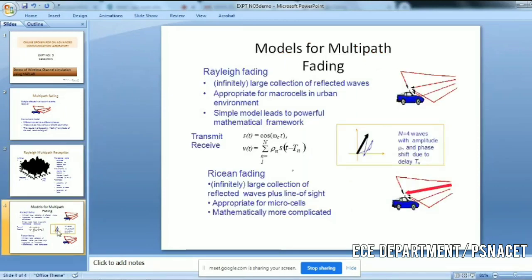We will discuss the conventional models: Rayleigh and Rician fading. These are the conventional models. Rayleigh fading involves a large number of reflected waves. There is no line of sight present.